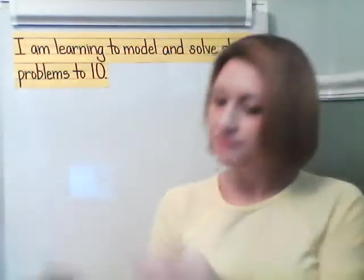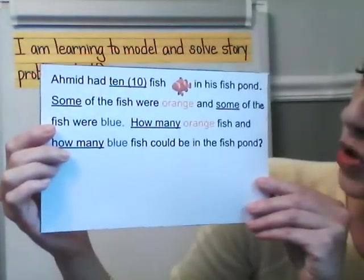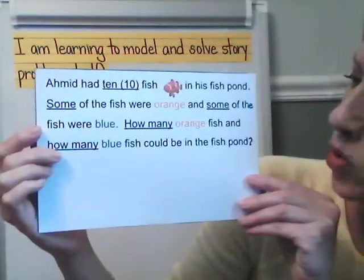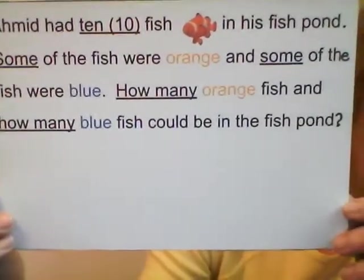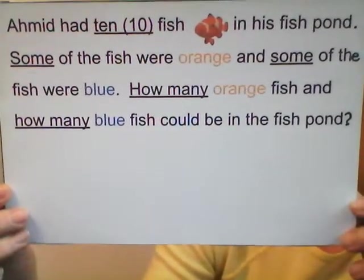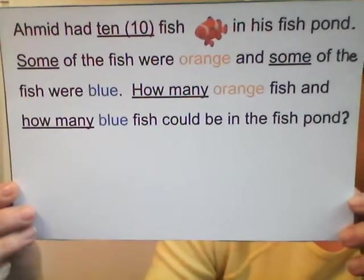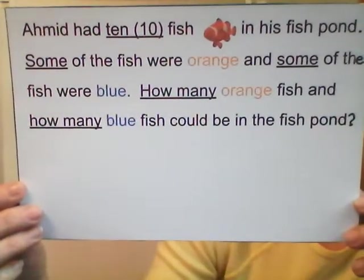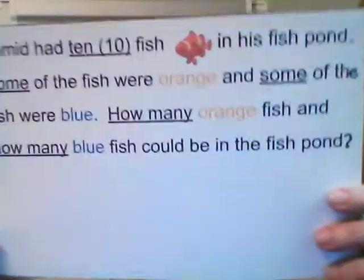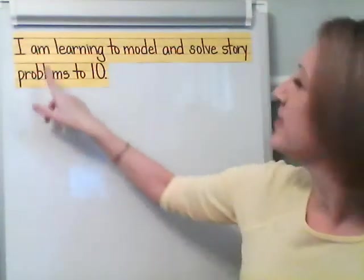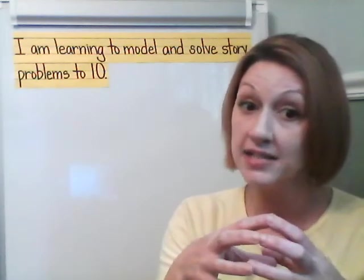Let's look at our next problem. Amid had 10 fish in his fish pond. Some of the fish were orange and some of the fish were blue. How many orange fish and how many blue fish could be in the fish pond? I want to point out some key words: there are 10 fish in the pond, some are orange and some are blue, and we need to figure out how many of each. We've worked on different combinations to make 10 and we practiced that in kindergarten.